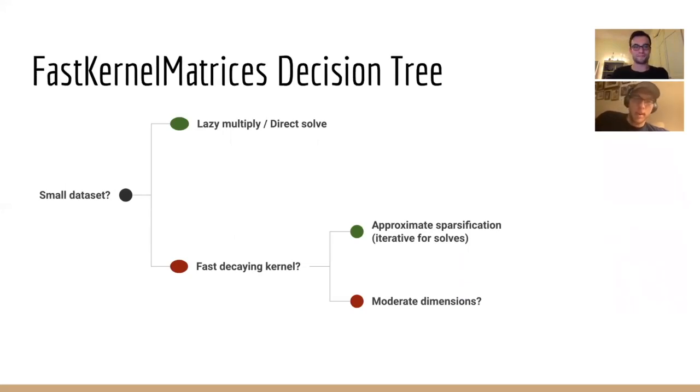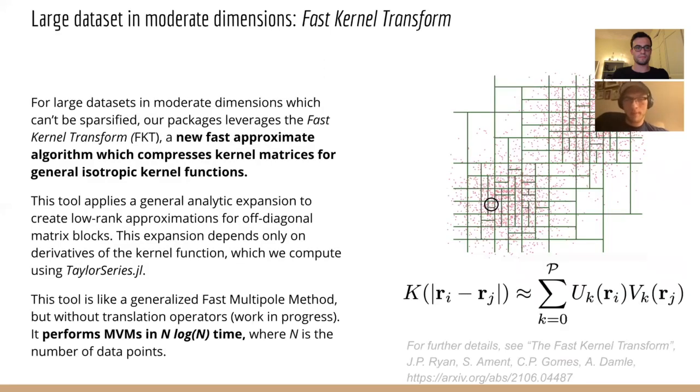Thanks, Sebastian. So if the kernel doesn't decay quickly, but the dimensionality is relatively moderate, for example, less than 70, we use a recently developed algorithm known as the fast kernel transform. The fast kernel transform is a new fast approximation algorithm used by our package. This technique can be thought of as a generalization of the Barnes-Hut method. It's analogous to the fast Gauss transform or the fast multipole method in that it uses analytic expansions of the kernel to compute approximate low rank representations of blocks of the kernel matrix.